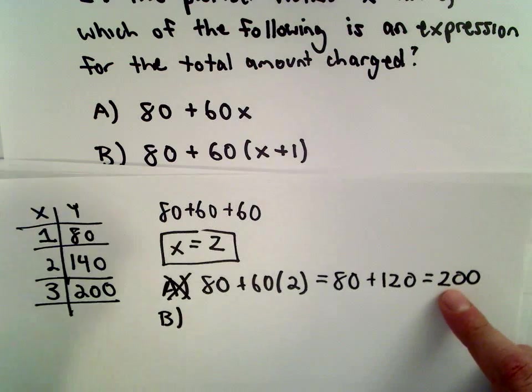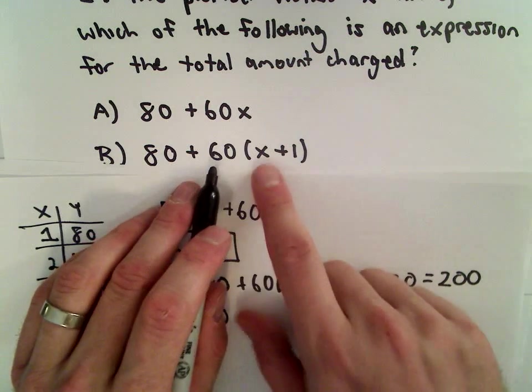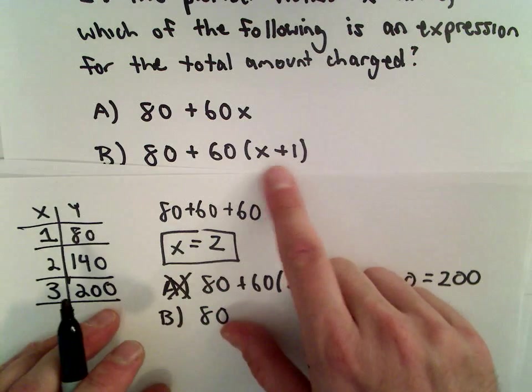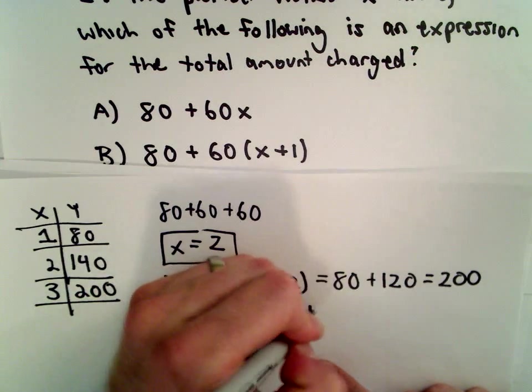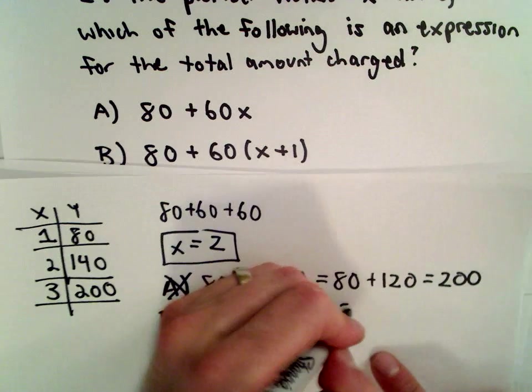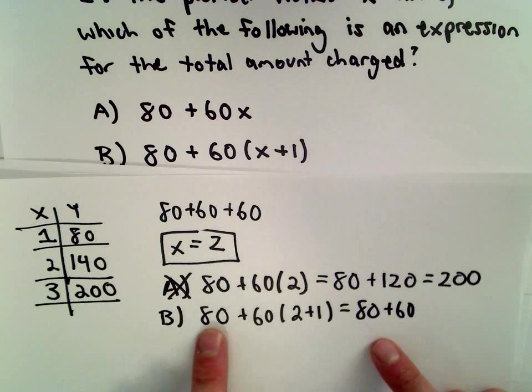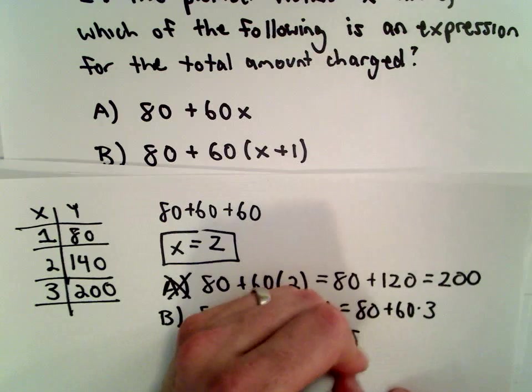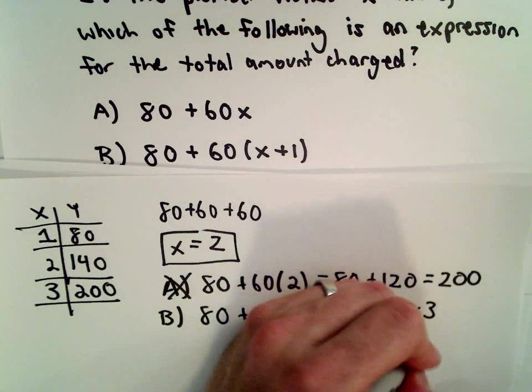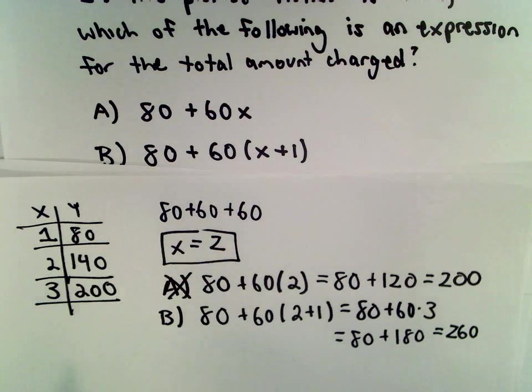Part B, does that work? Well, we would have 80 plus, now I'm going to substitute in x equals 2 into my expression in part B. In this case, I'm going to have 80 plus 60. 2 plus 1 is going to be 3. That's going to be 80 plus 180, which is going to be 260, which is definitely too much. So we know that one's not correct.